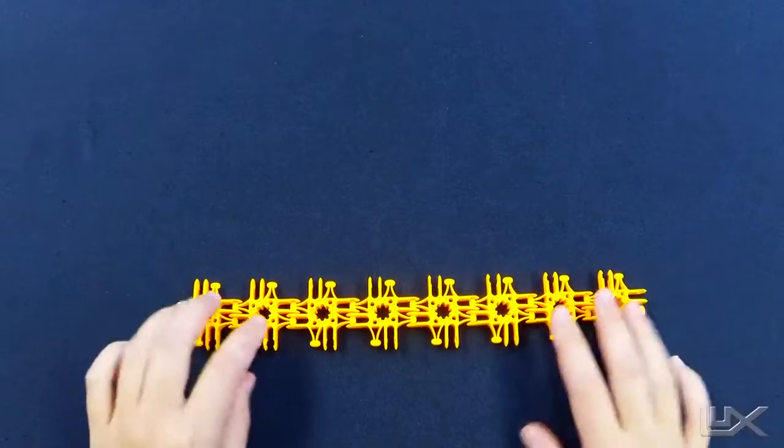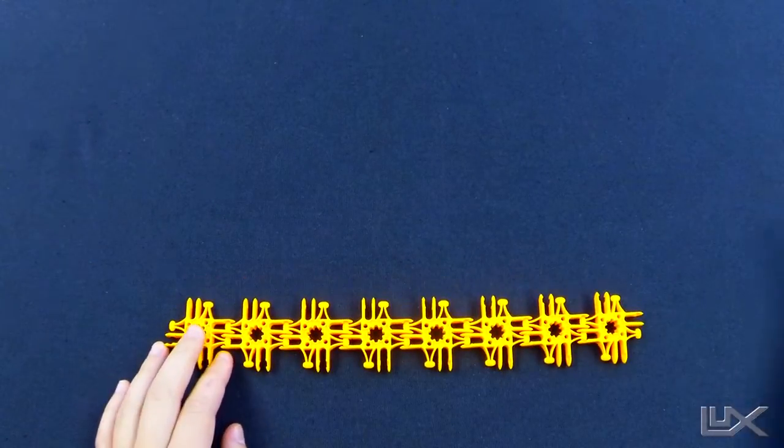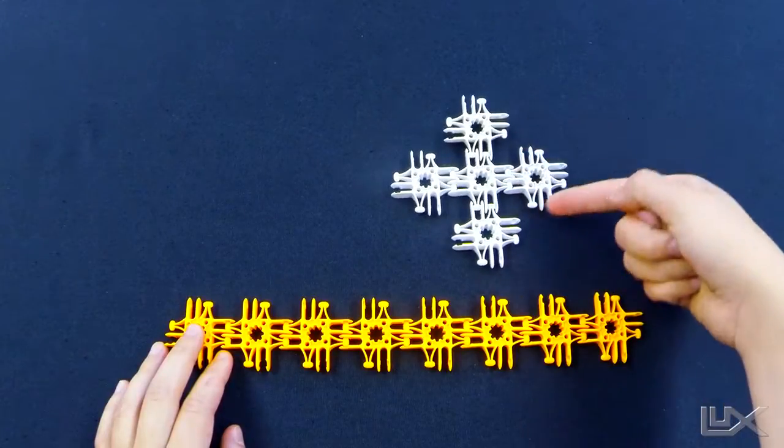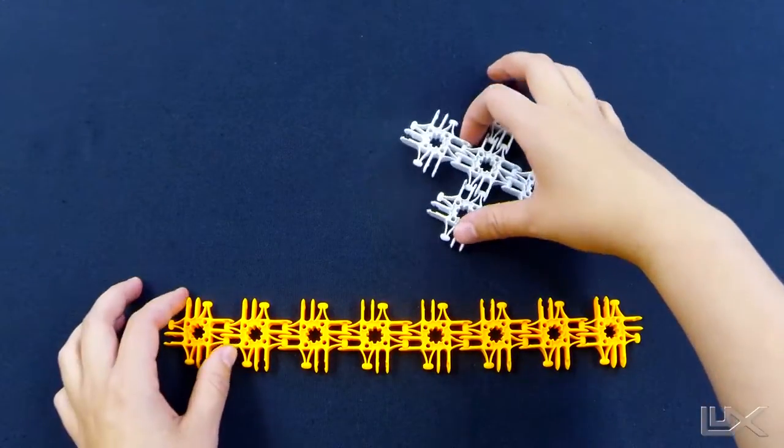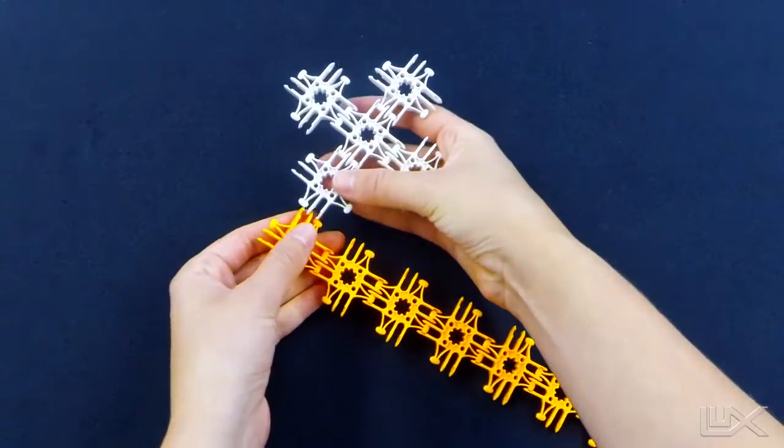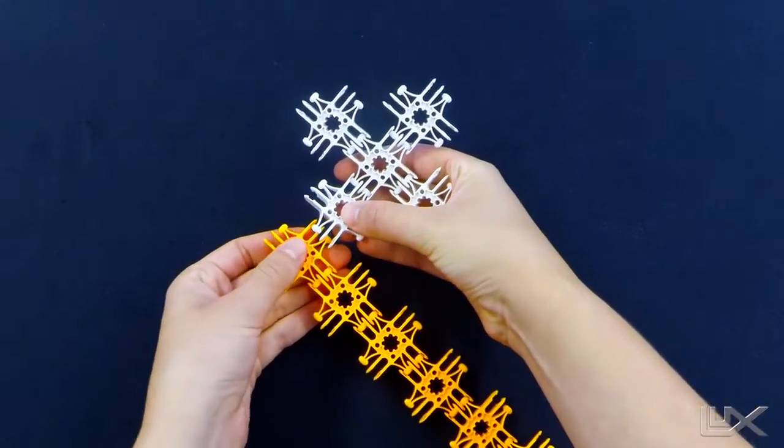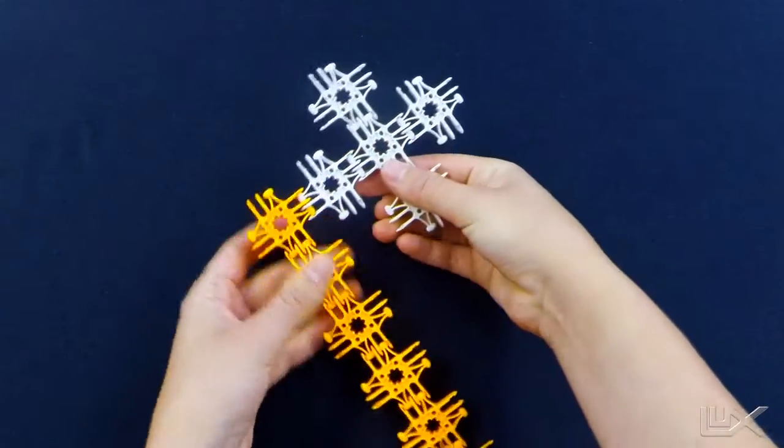So you start off with eight pieces in a strip. And then you take a plus sign, which is pretty easy to do, you don't really need a tutorial, but you connect the plus sign to every other piece on the strip.